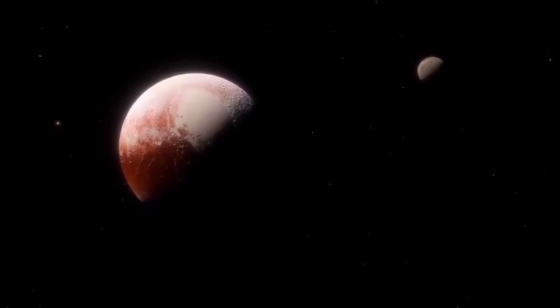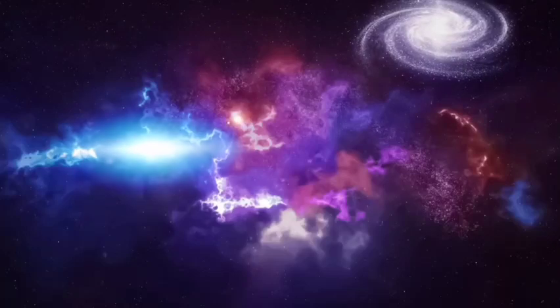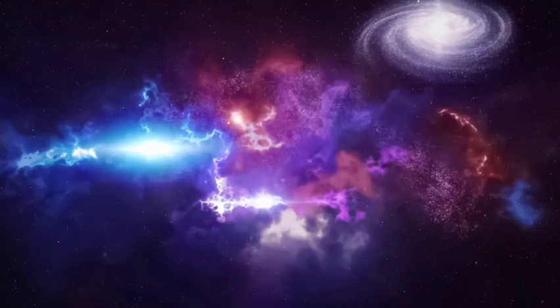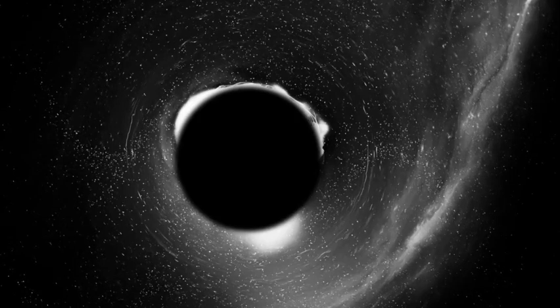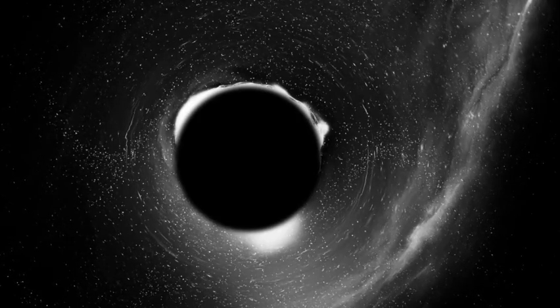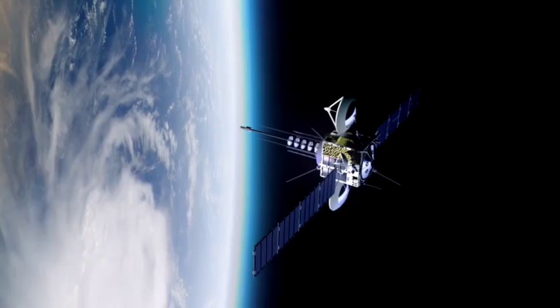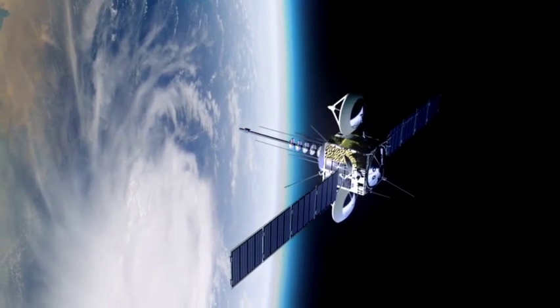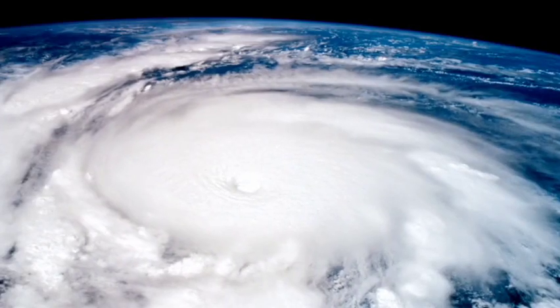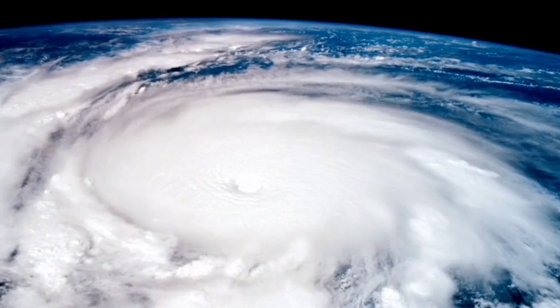However, the intrigue doesn't stop there. Pluto's orbit is marked by its unusually elliptical shape, meandering widely from the nearly circular orbits of the major planets. What makes Pluto's orbit even more exceptional is its inclination—it is tilted at 17 degrees relative to the ecliptic plane. This inclination and eccentricity add layers of complexity to its orbital dynamics.